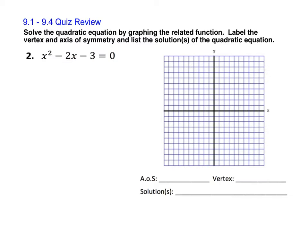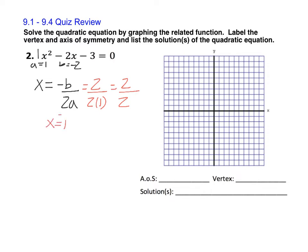The first problem: we want to solve the quadratic equation by graphing the related function. We'll label the vertex and axis of symmetry and list our solutions. Since I have a quadratic, I always want to start by finding the vertex when making a graph. Remember, the formula for the vertex is x equals the opposite of b divided by 2a — you can find this in lesson 9.1 in your notes booklet. Here, a is 1 and b is negative 2. The opposite of negative 2 is positive 2, over 2 times 1, which simplifies to 1. So x equals 1 is the axis of symmetry.